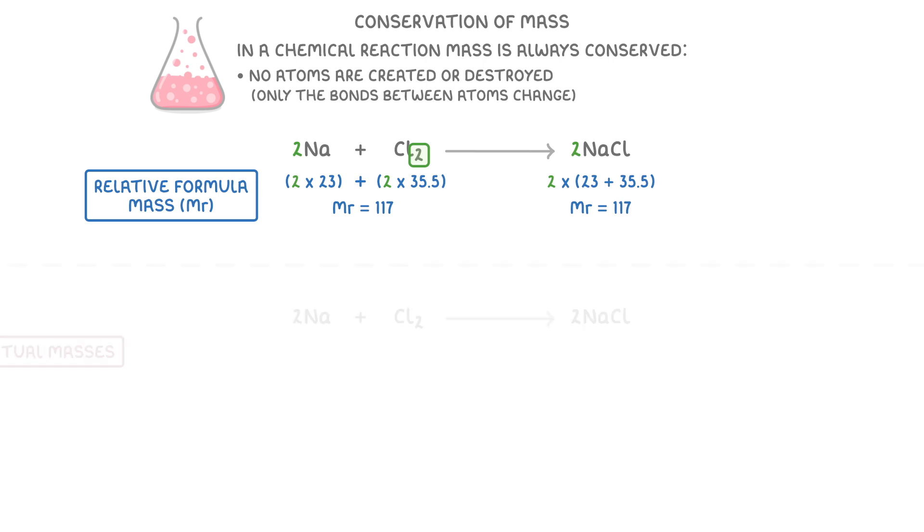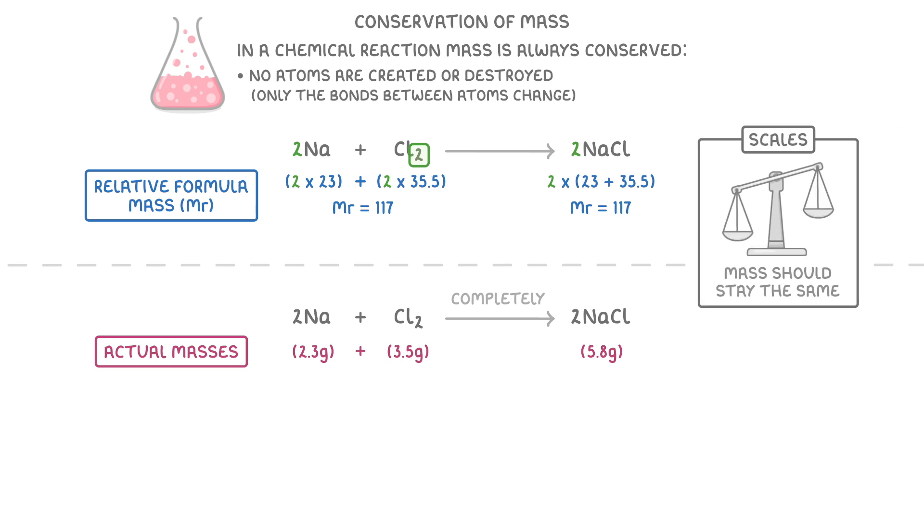Another way to think about it would be to look at the actual masses on each side. So if we reacted 2.3 grams of sodium with 3.5 grams of chlorine gas, then as long as they reacted together completely, we'd make 2.3 plus 3.5, so 5.8 grams of sodium chloride. So if we did our experiment on a set of scales, then the mass should stay the same throughout the entire reaction.